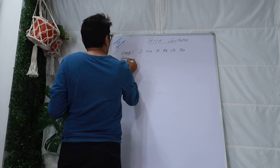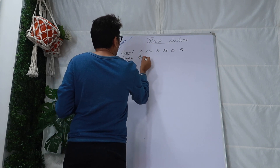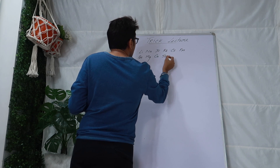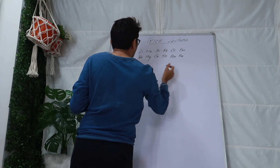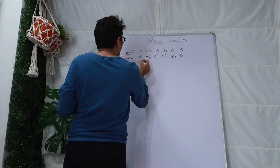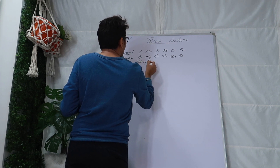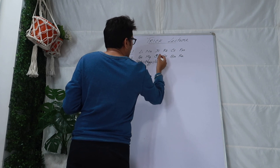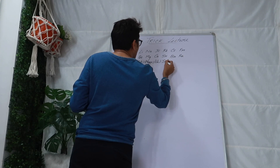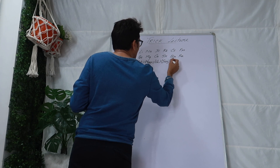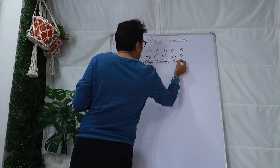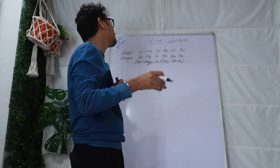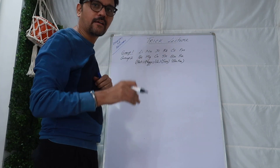Group 2 mnemonic is: Betty Maggie Ka Sar Bara. Betty is beryllium, Maggie is magnesium, Ka is calcium, Sar is strontium, and Bara is barium and radium. So group 2 is: beryllium, magnesium, calcium, strontium, barium and radium.